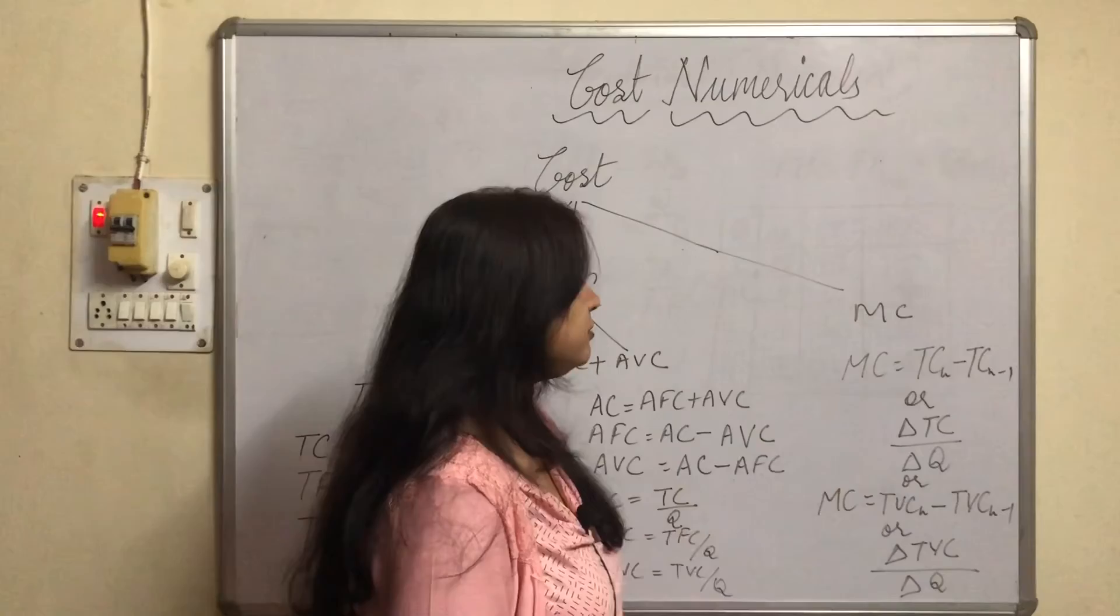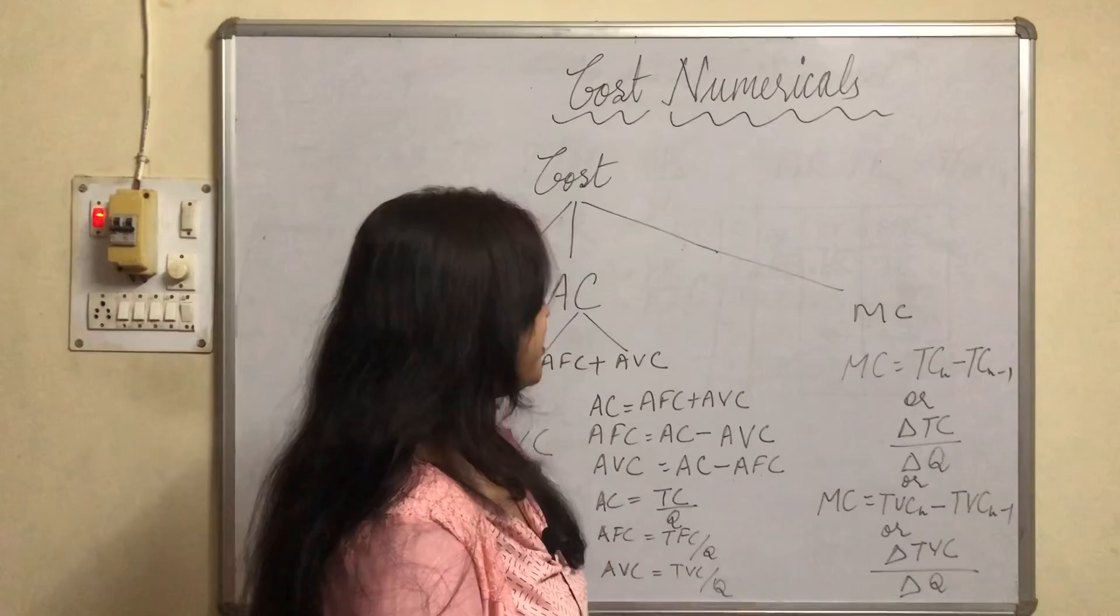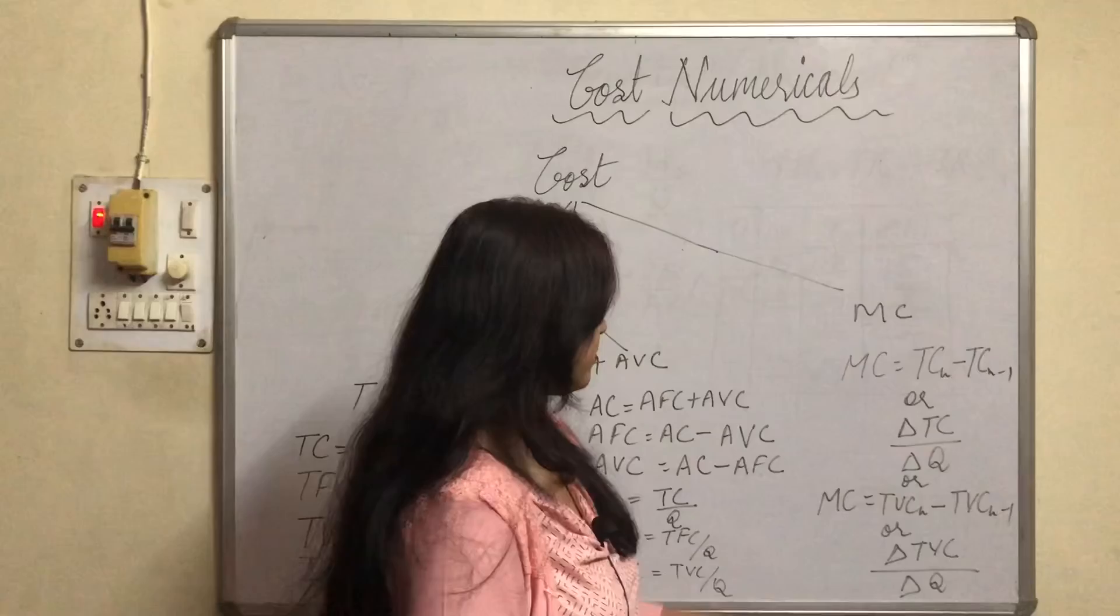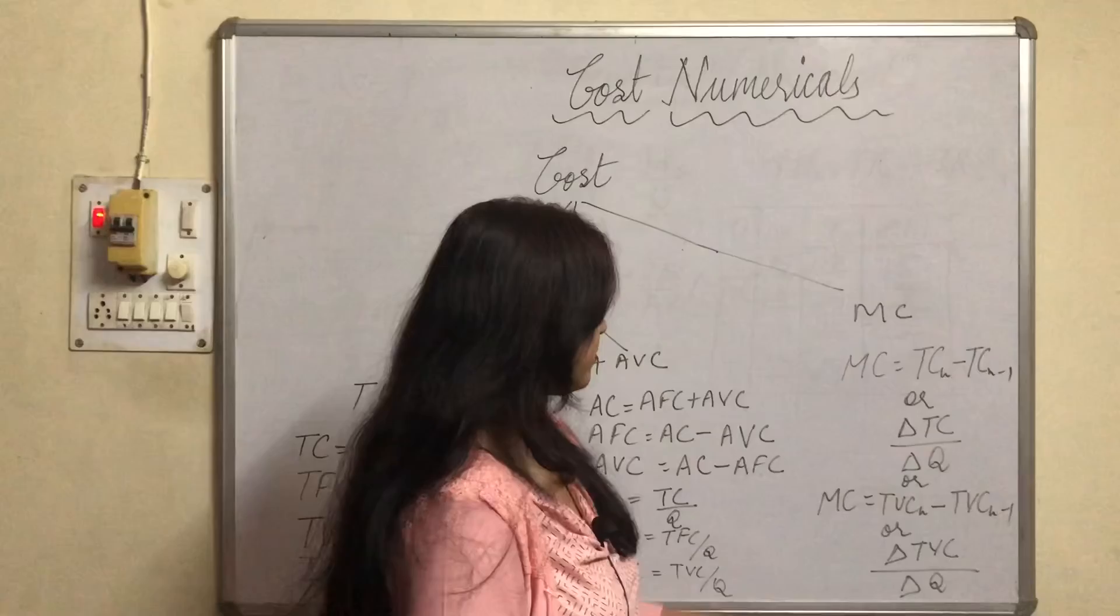And if you want to find from TVC then TVC sub n minus TVC sub n minus 1, or you can have delta TVC upon delta Q.